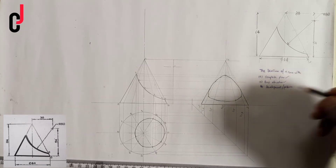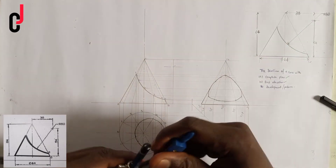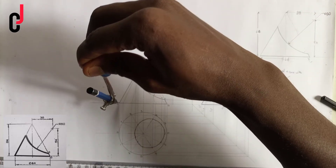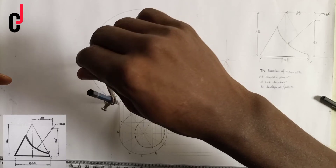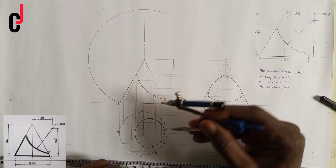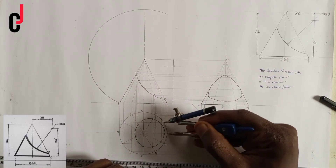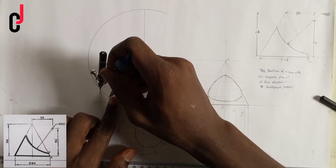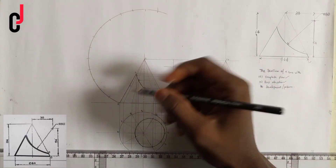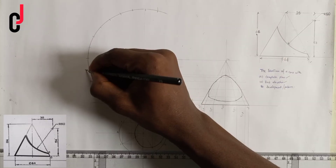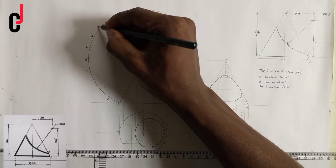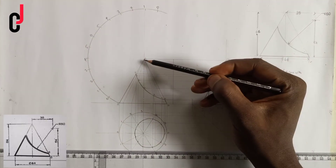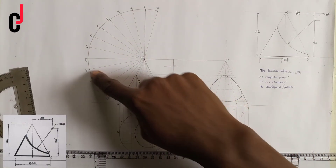Now I'm left with the development, also known as the pattern. I'll place my compass pin at point C, stretch to point A, and draw an arc. Then I'll transfer the distances from my circle — which is divided into 12 equal parts — marking each one on the constructed arc. I've succeeded in marking them out. I'll number them: zero, one, two, three, four, five, zero, five, four, three, two, one, zero. I'll join each numbered point to point C.